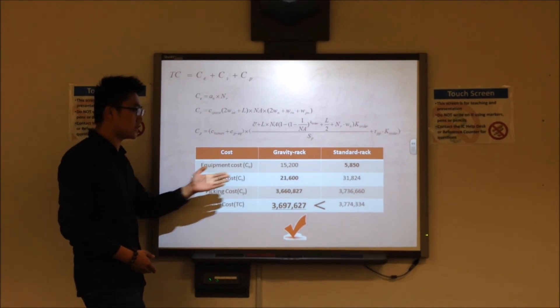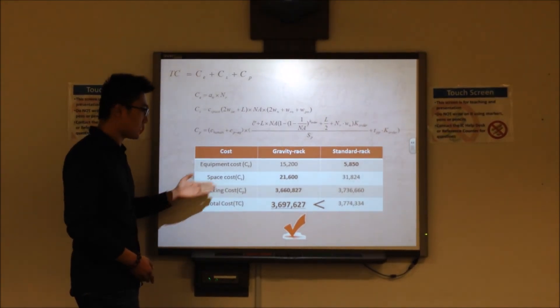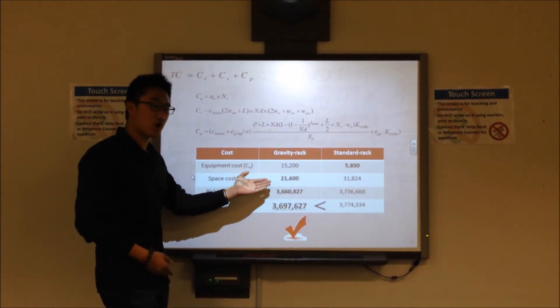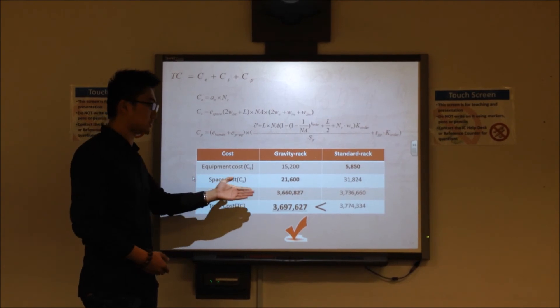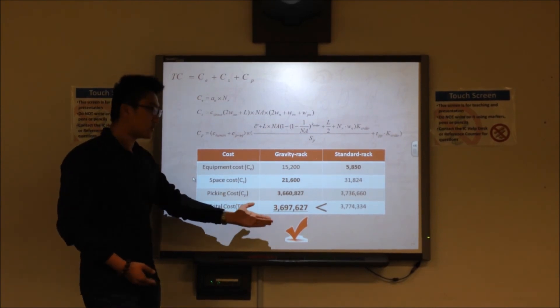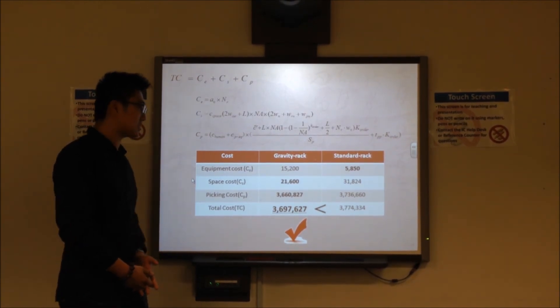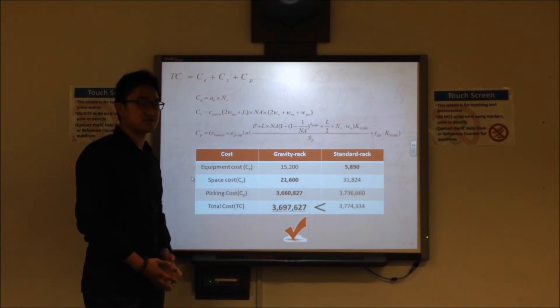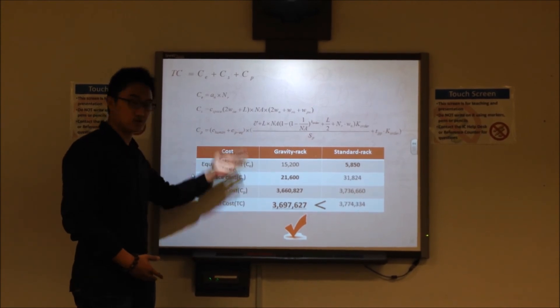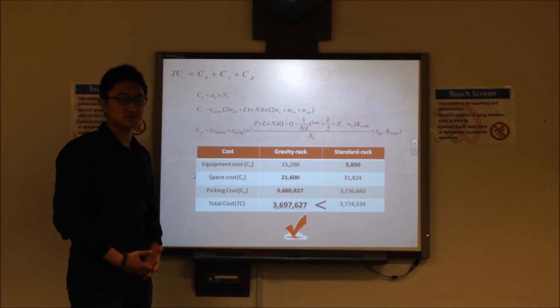Then we get all the results of our calculation. For equipment cost, the standard rack can save us a lot of money. However, when we see the space cost and picking cost, the gravity rack can save a lot of space, so we don't need to pay so much on the space cost. And for the picking activity, we don't need to pay so much for gravity rack, so it can save us a lot of money. The final result is, we only need to pay $697,627 for gravity rack, which is much lower than the other rack. For our fast pick area, we need to choose the gravity rack. Let's welcome Wendy to introduce our whole conclusion of our project.